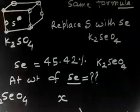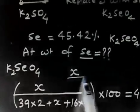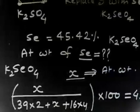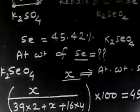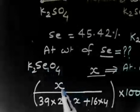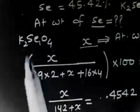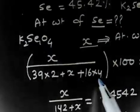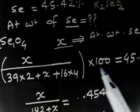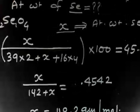Assume the atomic weight of selenium is X. There is only one atom of selenium in the compound, so its contribution is X. The total molecular weight of K2SeO4 is 2×39 (for potassium) plus X (for selenium) plus 4×16 (for oxygen), which equals 78 + X + 64. The percentage of selenium is therefore X divided by (78 + X + 64), multiplied by 100, and this equals 45.42%.